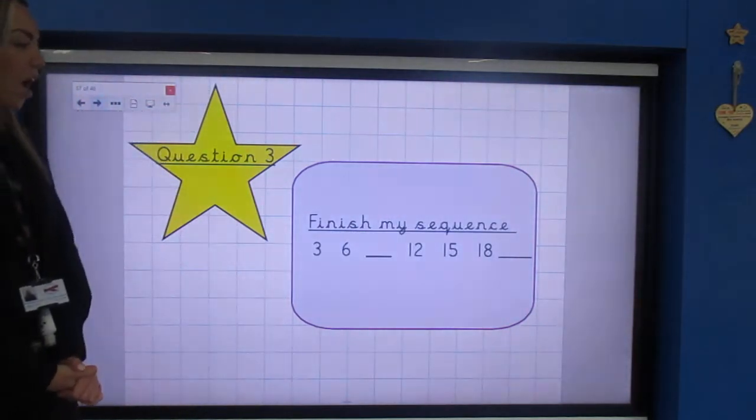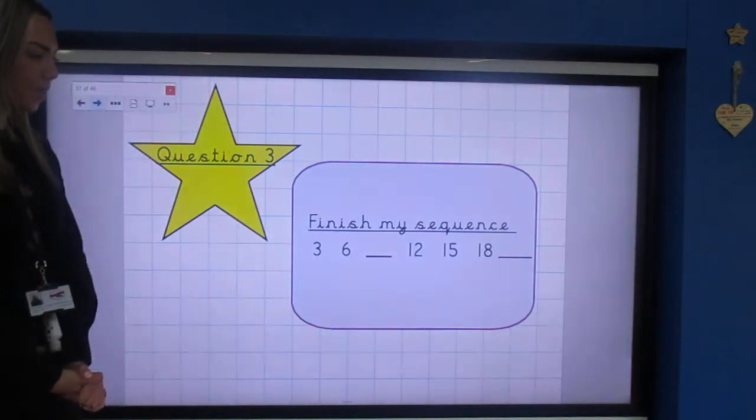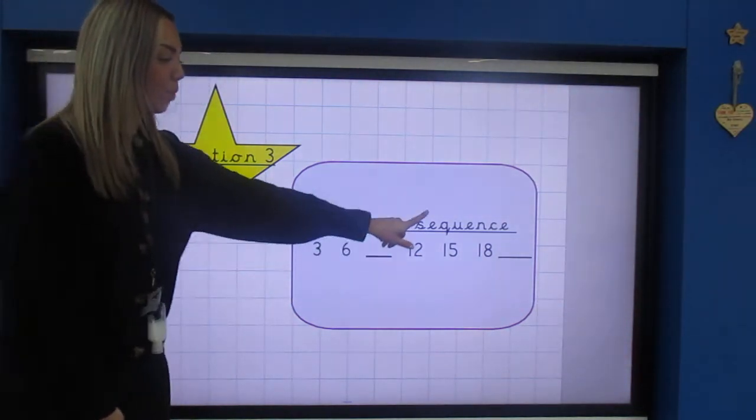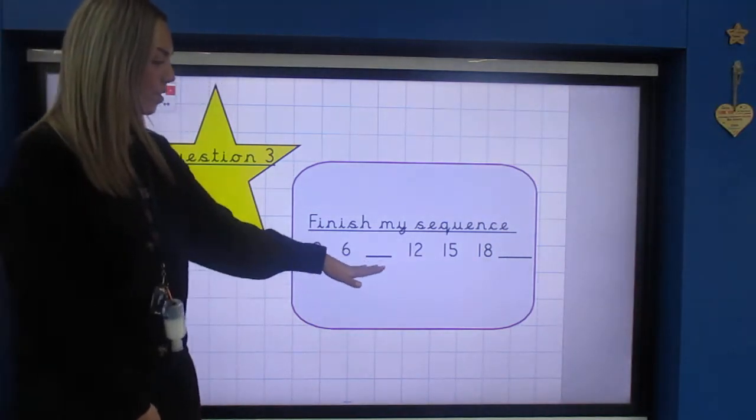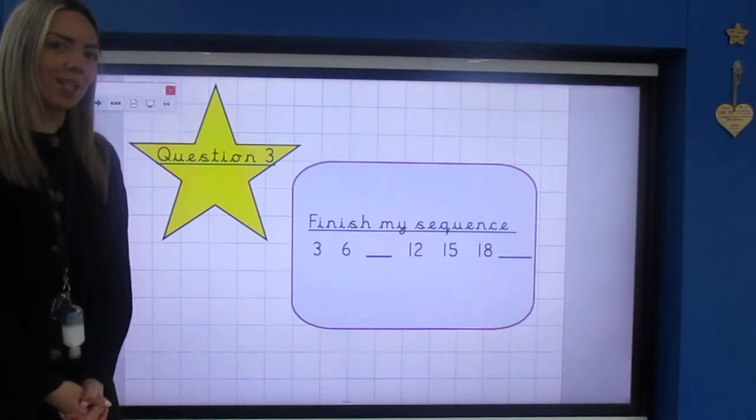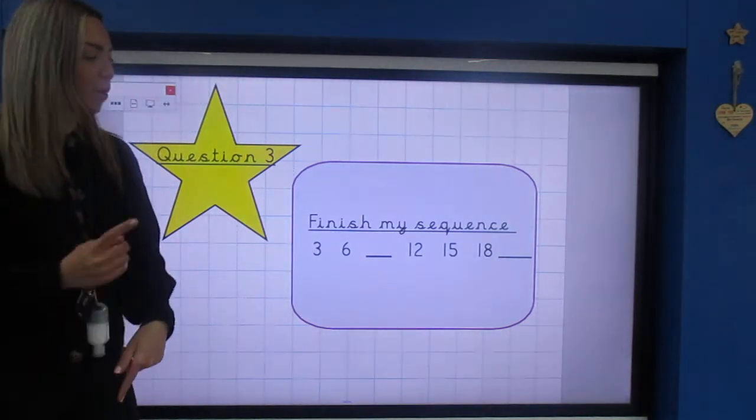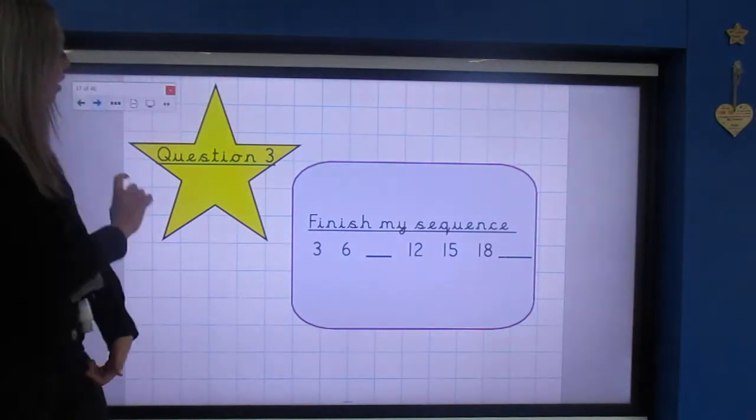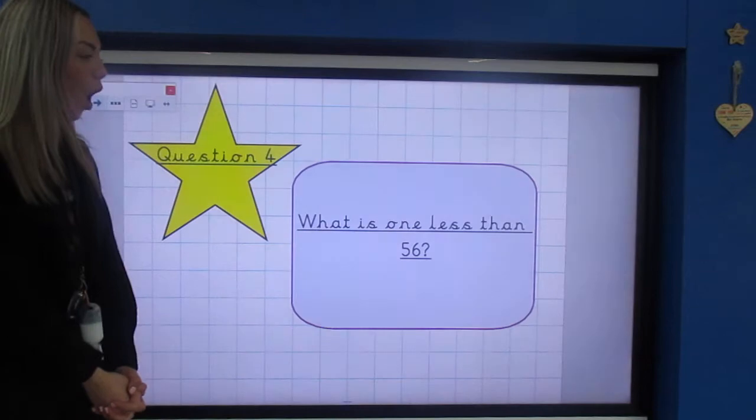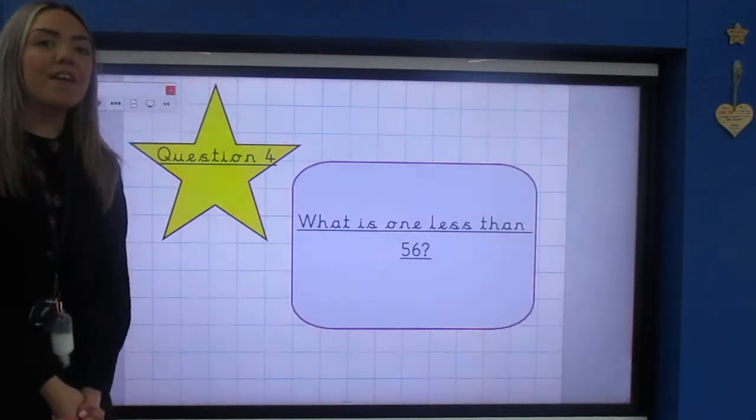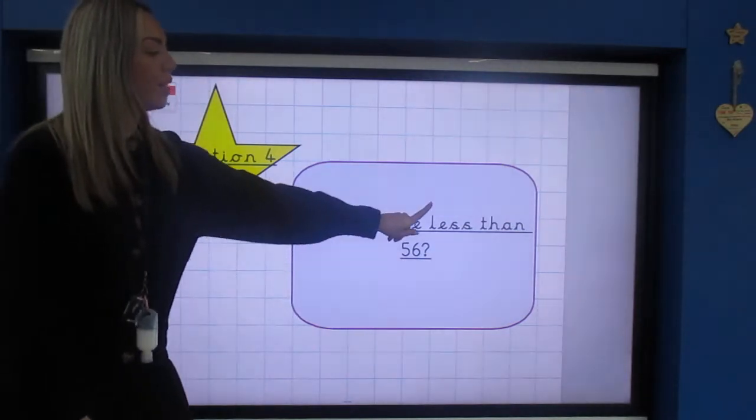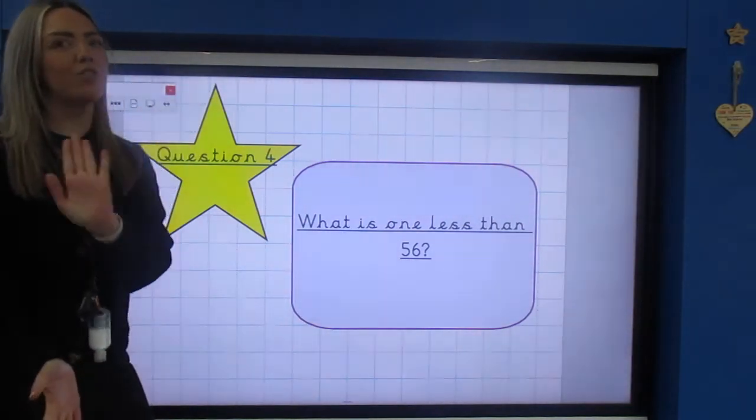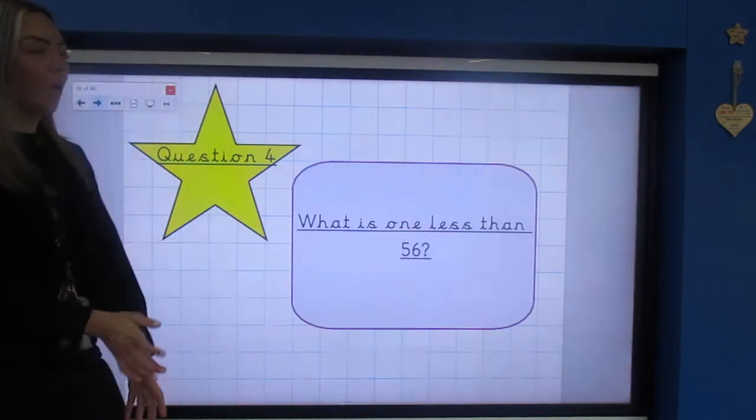Number three: finish my sequence. I'm not going to say it because that will give it away, but you've got two blank spaces. For your answer I would like to see each number written in the right sequence. Don't forget you can pause the board at any time or go back if you need to. Question number four: what is one less than 56?